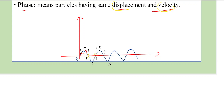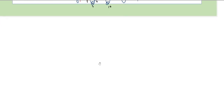When we say particles are in phase, they must have both the same displacement and the same velocity. So particles 2 and 8 are in the same phase, particles 5 and 10 are in the same phase, and the particle at the origin and particle 6 are in the same phase. Based on this, we have three kinds of wavefronts.